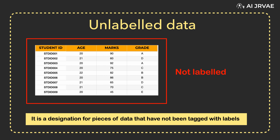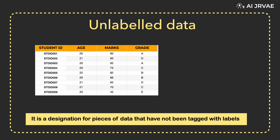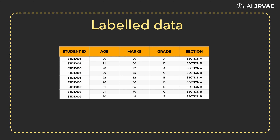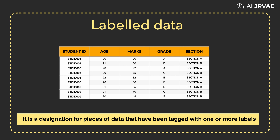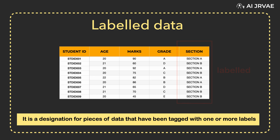These types of data are used in various forms of machine learning. Labeled data is a designation for pieces of data that have been tagged with one or more labels identifying certain properties or characteristics or classifications or contained objects. Now that we've discussed what is labeled and unlabeled data, it's time for supervised learning.